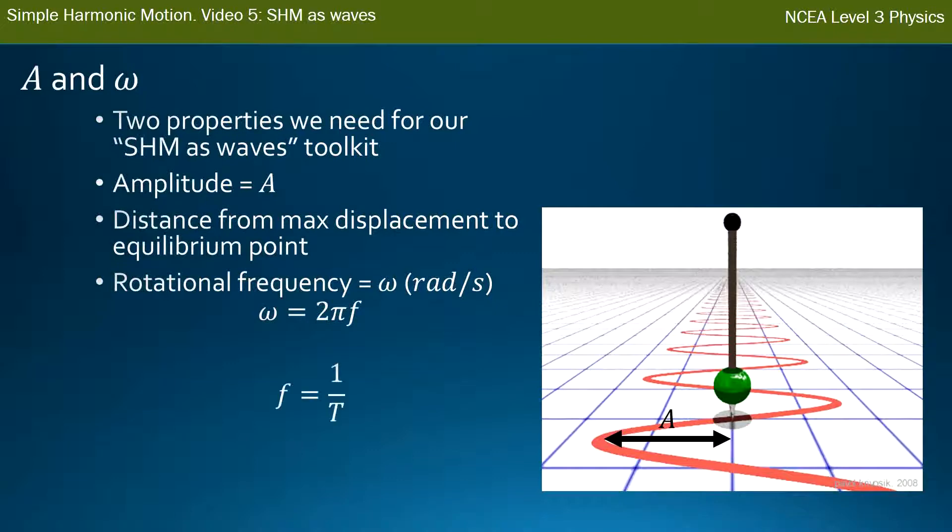If you're given time period, there's a relationship between time period and frequency, which is: 1/T equals frequency. So I can rearrange that first formula for rotational frequency and get: rotational frequency is 2π over the time period. So two bits of information that we need to even start this: amplitude and rotational frequency. In the next video we'll go through the whole toolkit and how we use it.